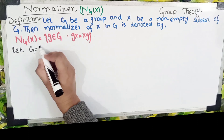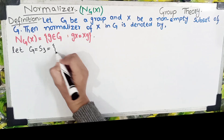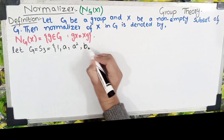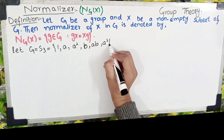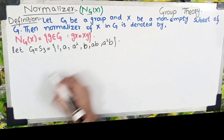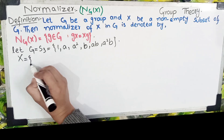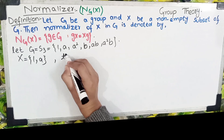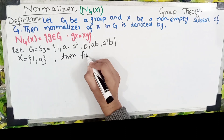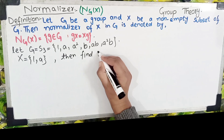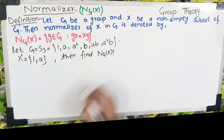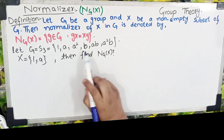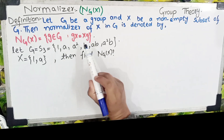اس کی example کرتے ہیں۔ Let G = S3, whose elements are {1, a, a², b, ab, a²b}. اور ایک non-empty set X = {1, a} given ہے۔ ہمیں find کرنا ہے normalizer of X in G, یعنی N_G(X)۔